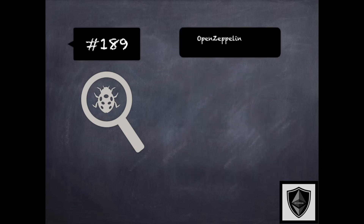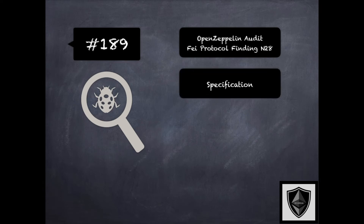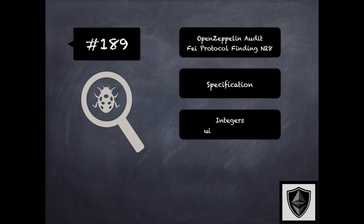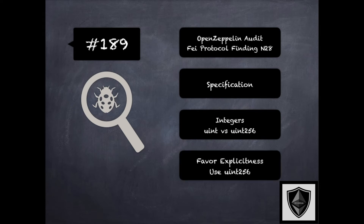Finding 189 is another finding from OpenZeppelin's audit of FAE protocol, where the concern was the use of uint instead of uint256 across the code base. The recommendation was to consider replacing all instances of uint with uint256 in favour of explicitness. This is related to explicit over implicit in 164 and clarity in 188 of the security pitfalls and best practices 201 module.